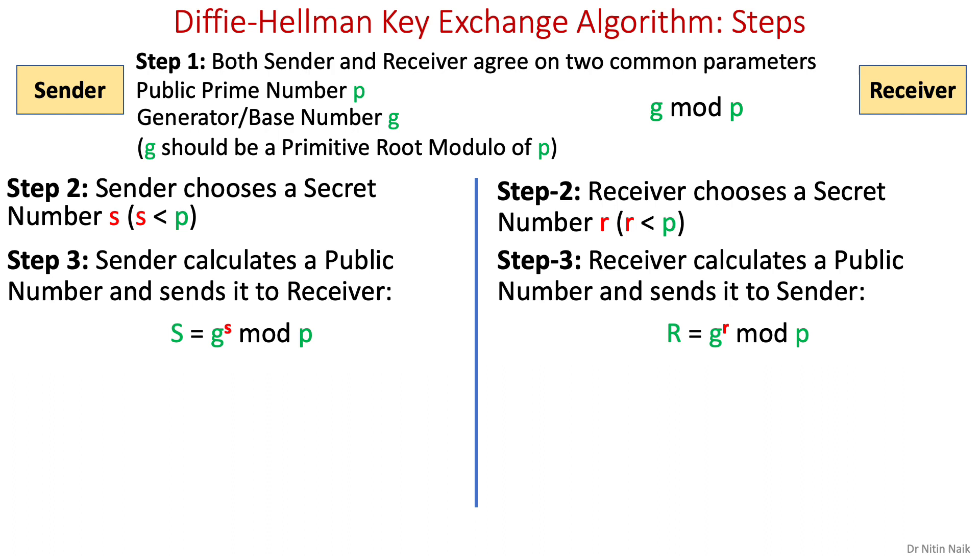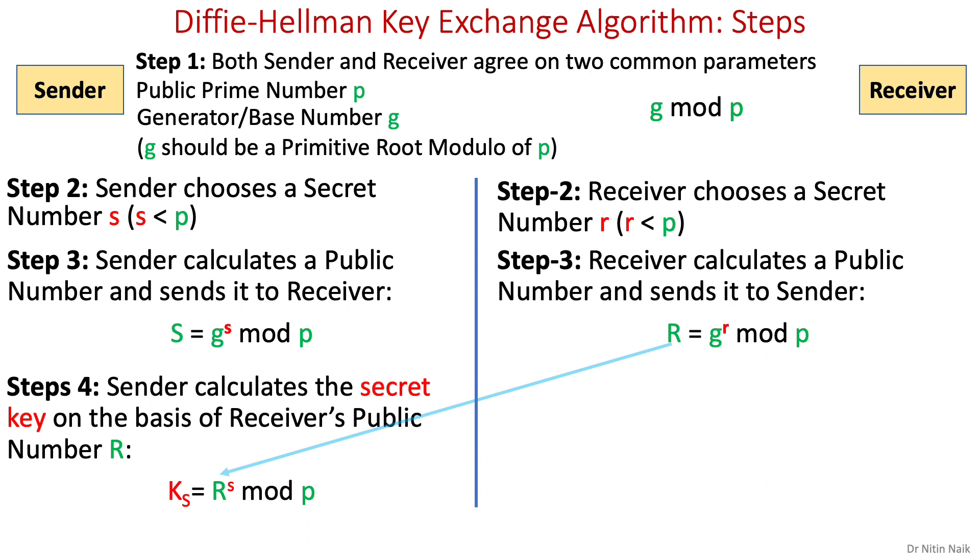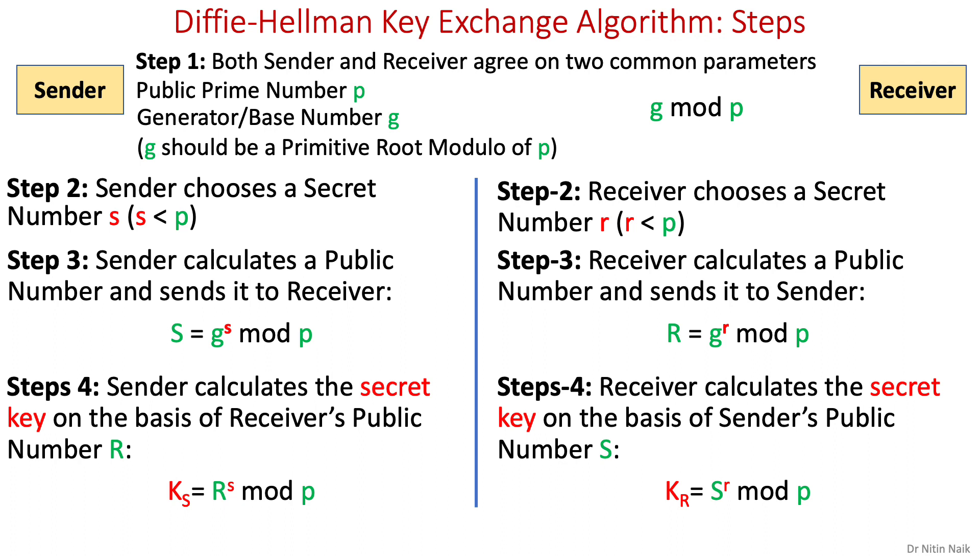In step four, both sender and receiver calculate the secret key separately at their end. Sender calculates a secret key on the basis of receiver's public number r and receiver calculates the secret key on the basis of public number s and the same shared secret key is calculated by both sender and receiver without communicating it as it requires in symmetric key encryption.